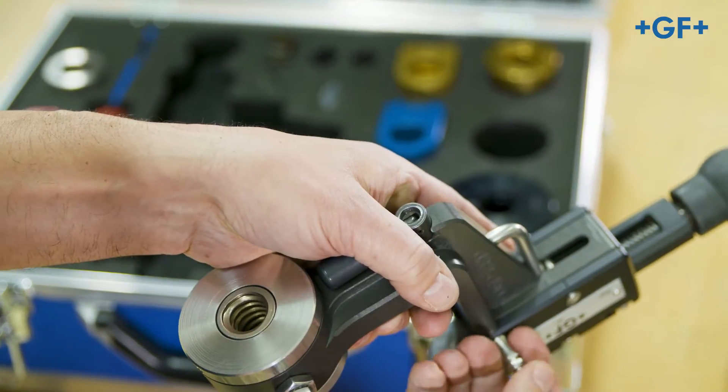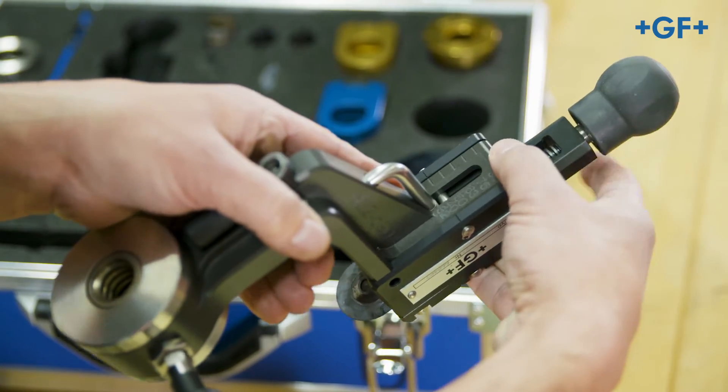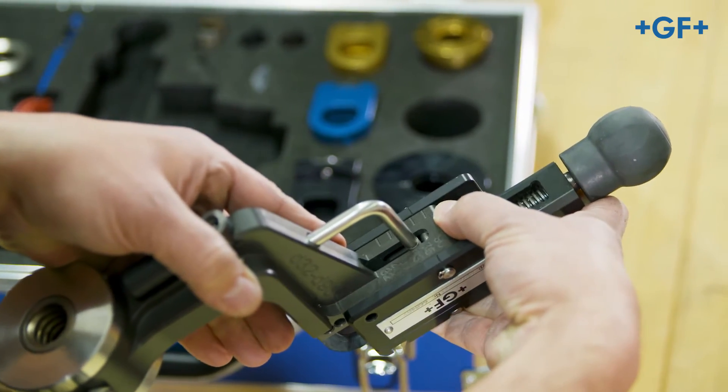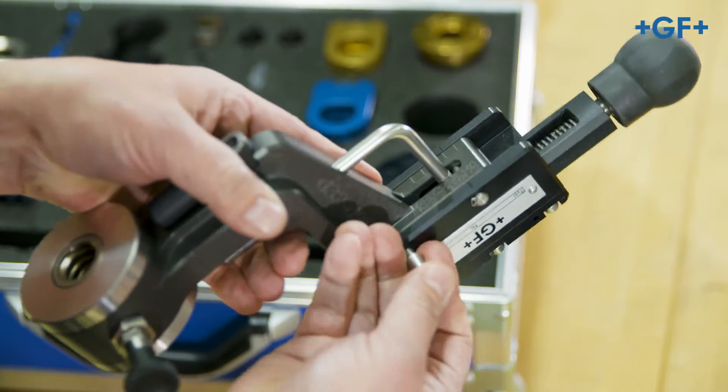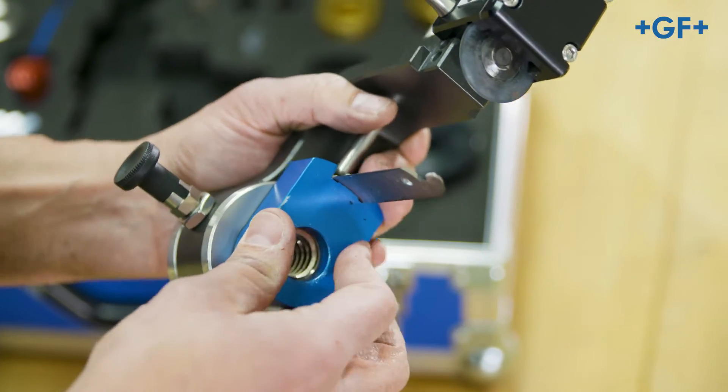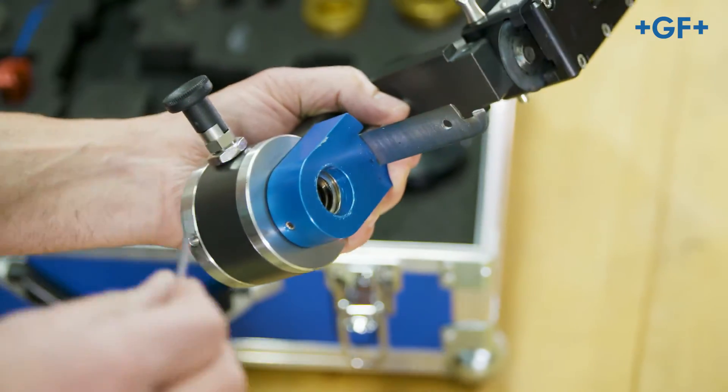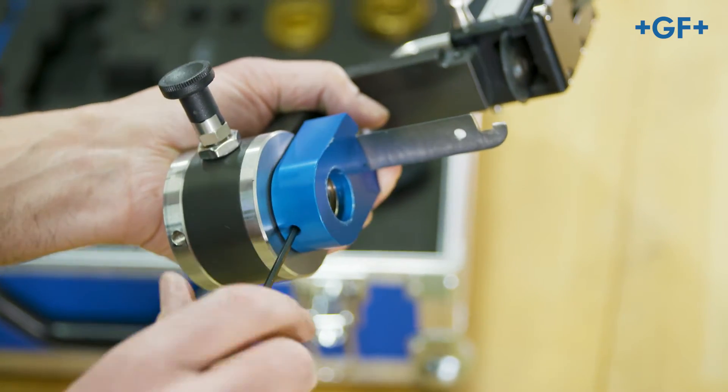Set the circular blade device of the foam removal unit according to the chosen CoolFit pipe diameter. Mount the corresponding peeling blade according to the CoolFit pipe diameter onto the foam removal unit and tighten it with the Allen key.